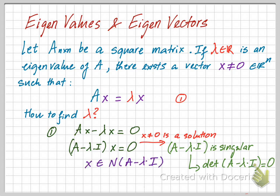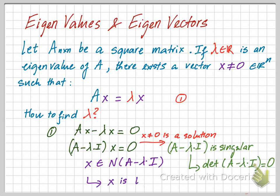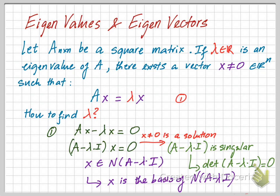Since x is a solution of the homogeneous system (A minus lambda·I)·x = 0, x is in the null space of A minus lambda·I. Since x is an arbitrary nonzero vector, x is a basis of the null space of A minus lambda·I. This tells us how to find the eigenvector x associated with eigenvalue lambda: by finding the basis of the null space of A minus lambda·I once lambda is known.